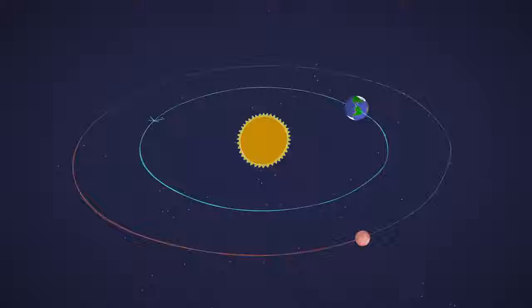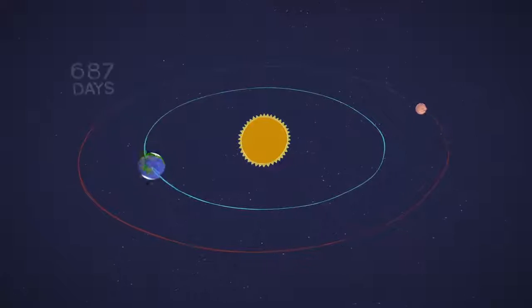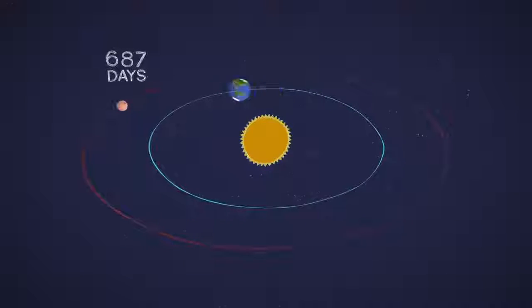Mars is a little slower and farther from the Sun, so a full circuit takes 687 Earth days, or one Mars year.